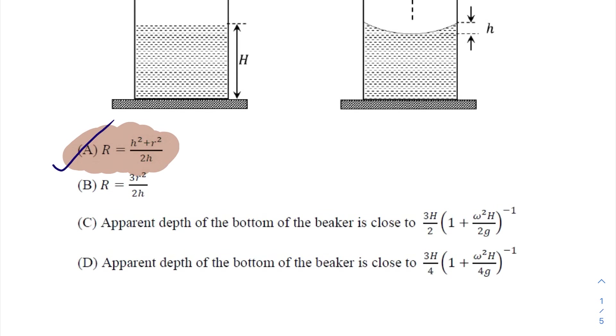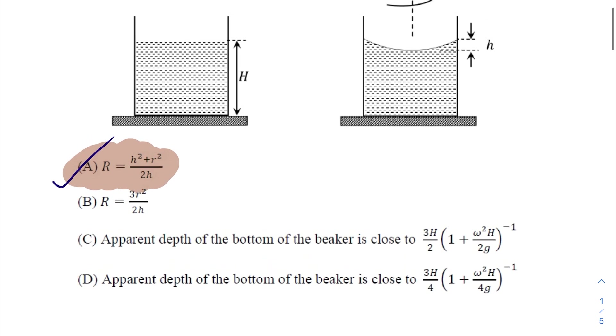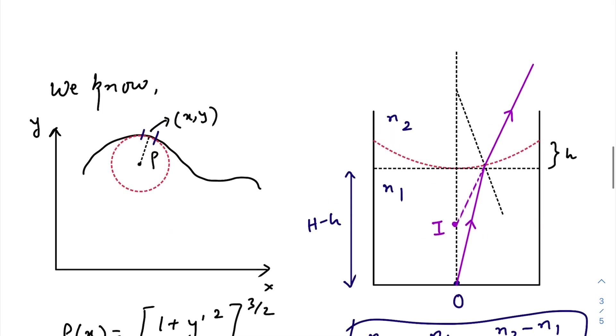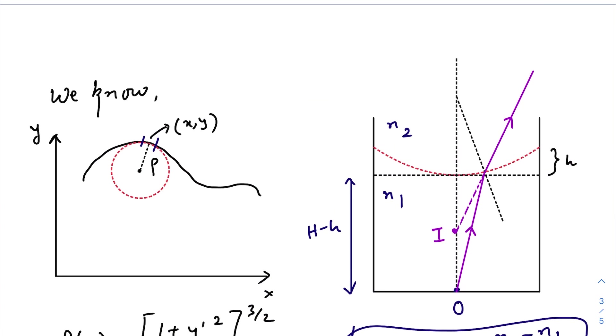Now let us come to option C or option D - that is the apparent depth of the bottom of the beaker. Now here comes the topic of refraction. But let us do a quick theory once again. Now we all know that the equation for the radius of curvature...